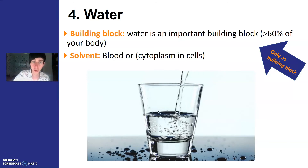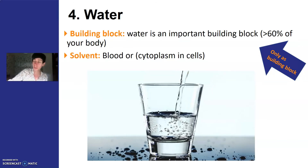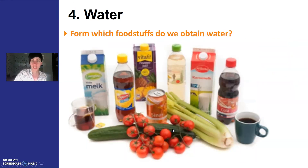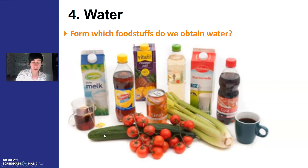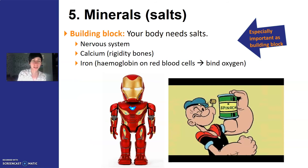The fourth group is water as a nutrient. Water is mainly used as a building block, and it's actually 60% of your body — so it's huge. A lot of the blood plasma is water, and water is a really important solvent to transport other substances in. The cytoplasm inside a cell is also largely water with dissolved substances. This is why you need a lot of water. Which foodstuffs give us water? Mainly all the drinks, but also foods like tomatoes and cucumbers have a lot of water, so you can get water without just drinking.